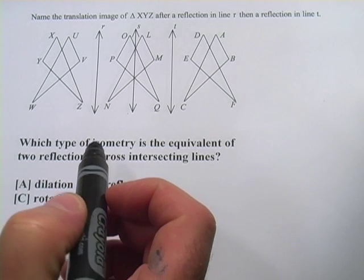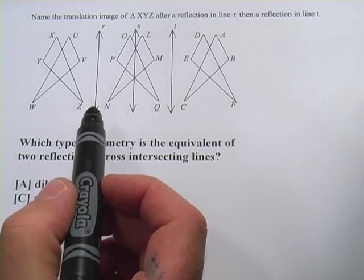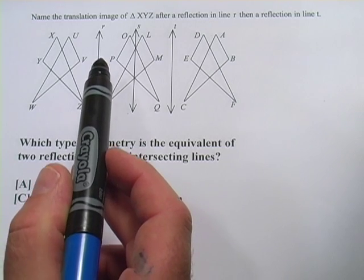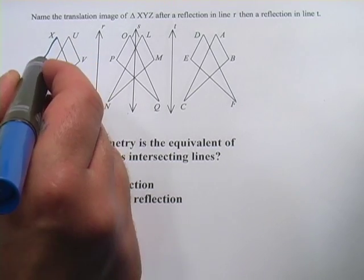It can get a little bit complicated, but if we take it a step at a time, I'm sure it'll make sense to you. This first one says, name the translation image of triangle XYZ. So we're starting with this guy, triangle XYZ.